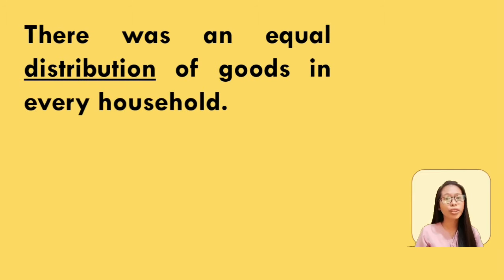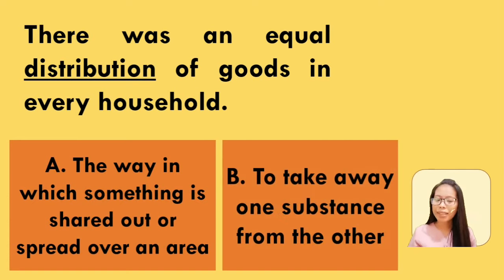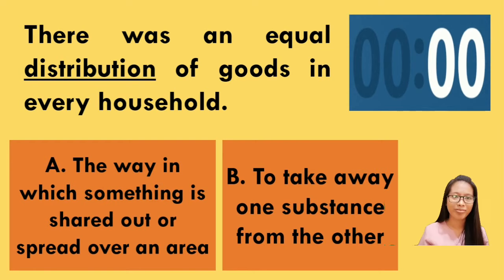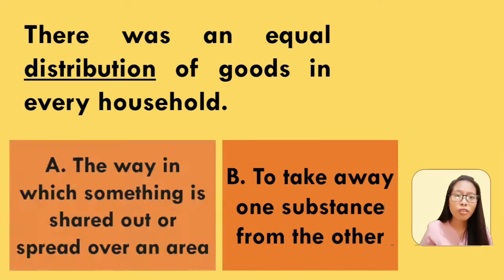Distribution of goods in every household. What does the underlined word distribution mean? Is it the way in which something is shared out or spread over an area, or to take away one substance from the other? Great! It's letter A — it is the way in which something is shared out or spread over an area.